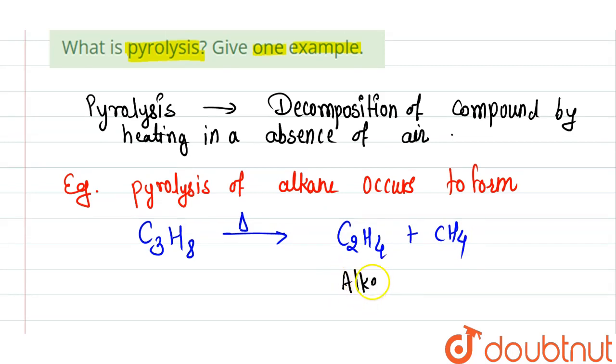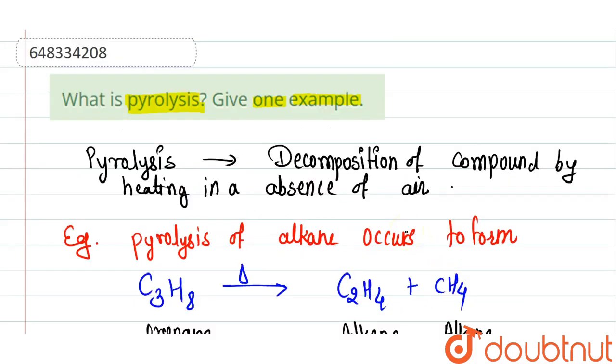It is the alkene and CH4 is the alkane, that is methane, and here ethene is there. So when propane undergoes pyrolysis, formation of ethene and methane. This is pyrolysis, the decomposition of compound by heating in absence of air.